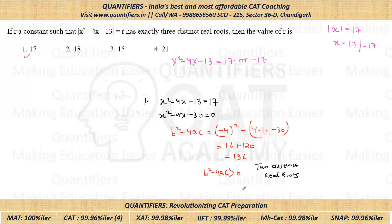Now let's solve for the second case. If we look at the second case, that is x² - 4x - 13, this is equal to minus 17. So on solving it, we'll get x² - 4x + 4 is equal to 0.